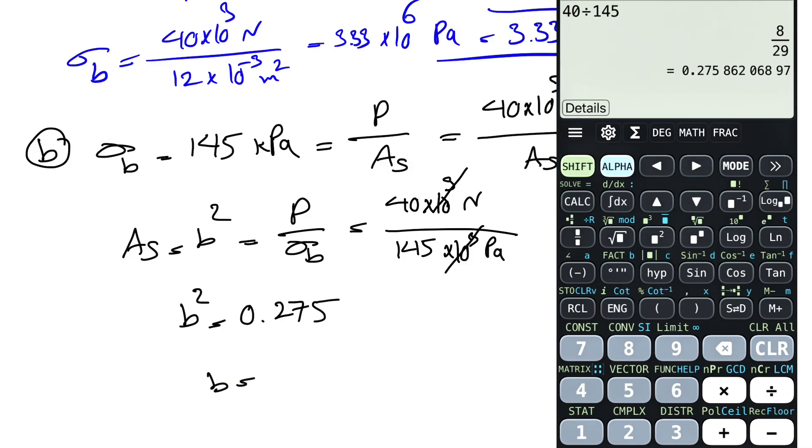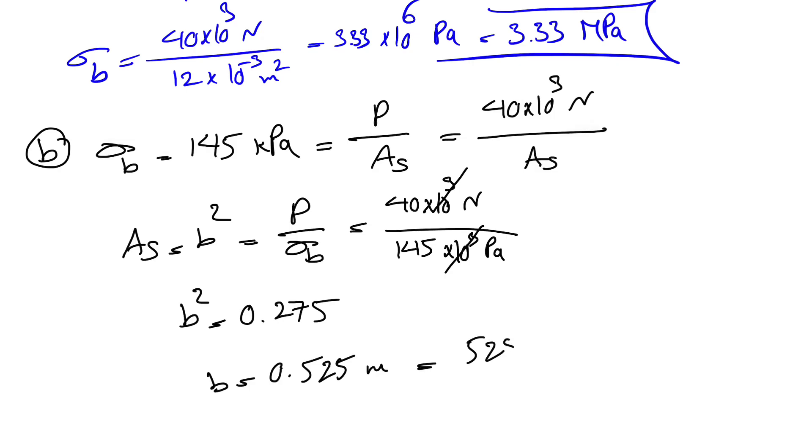B would be the square root of what we found. So what we're going to get for B is 0.525 meters, or 525 millimeters. And that's going to be the answer for part B of the question.